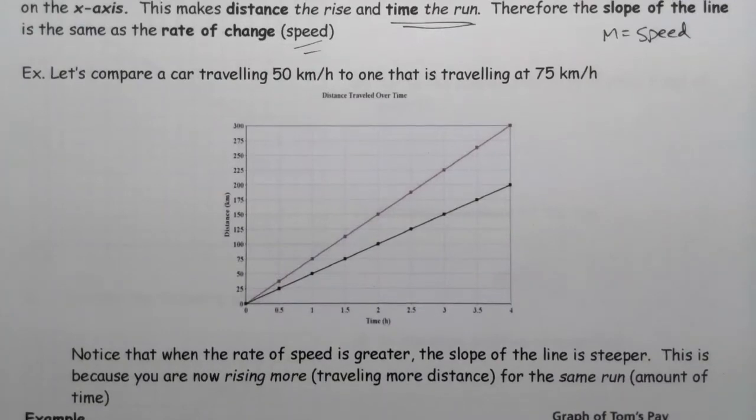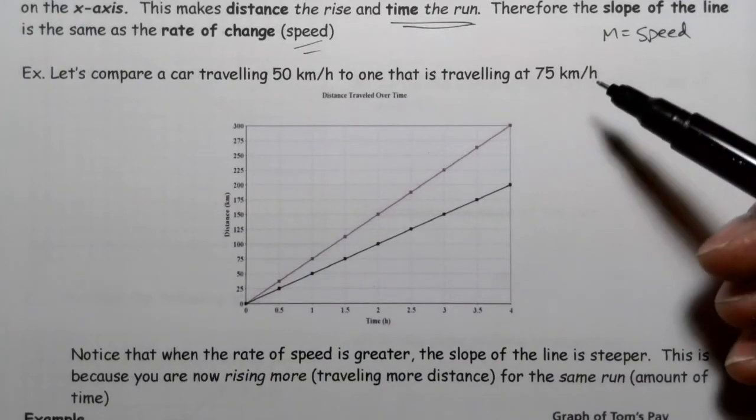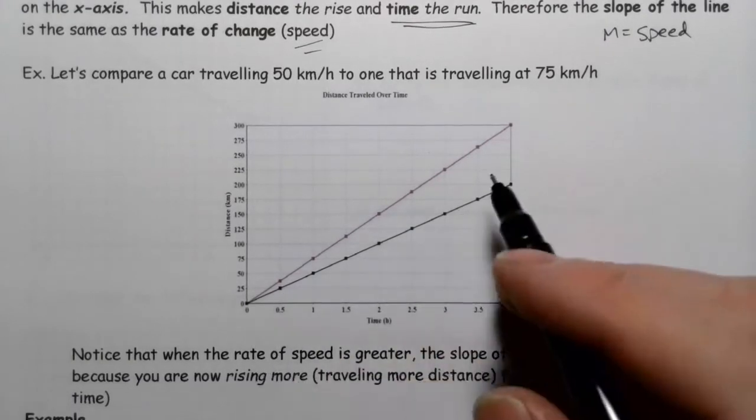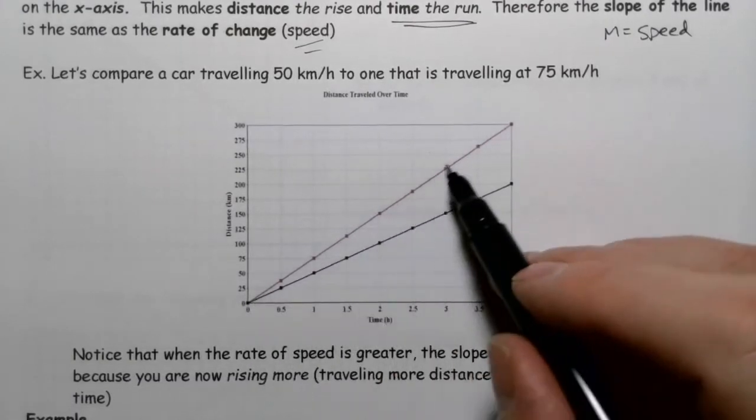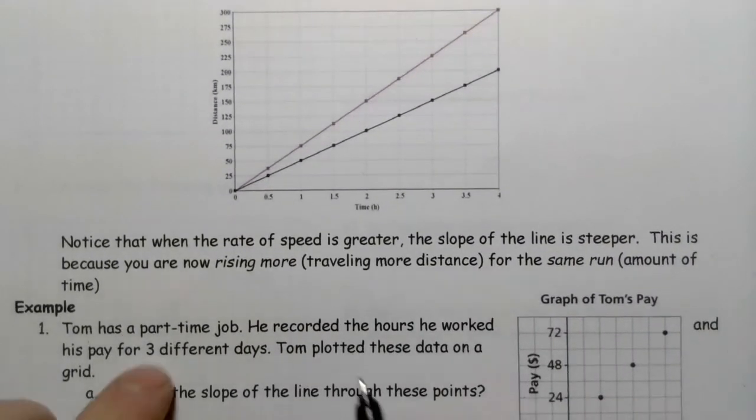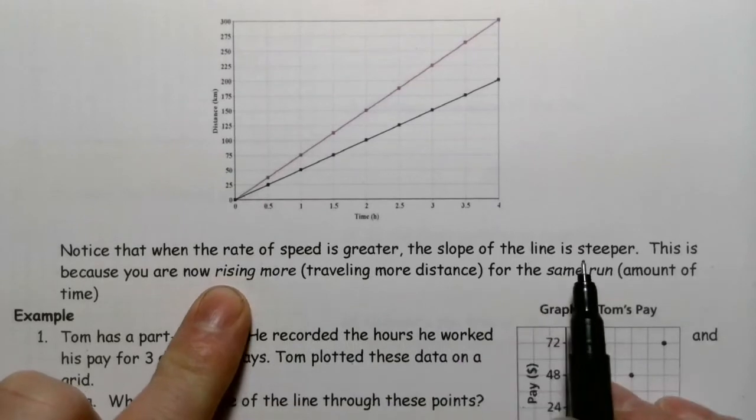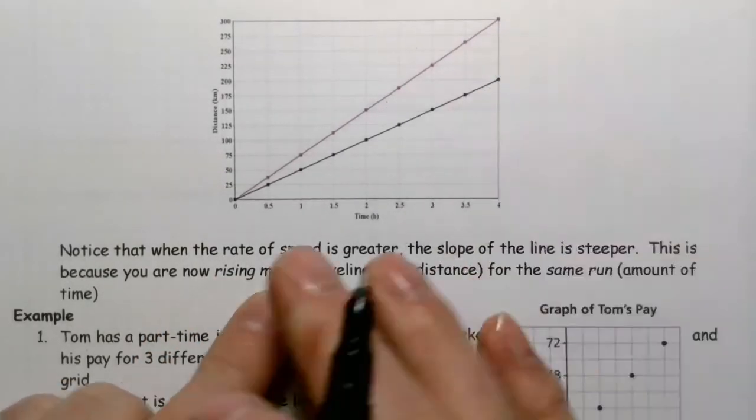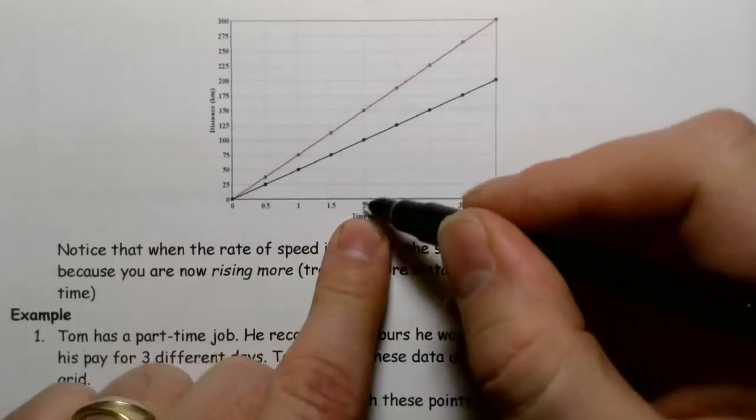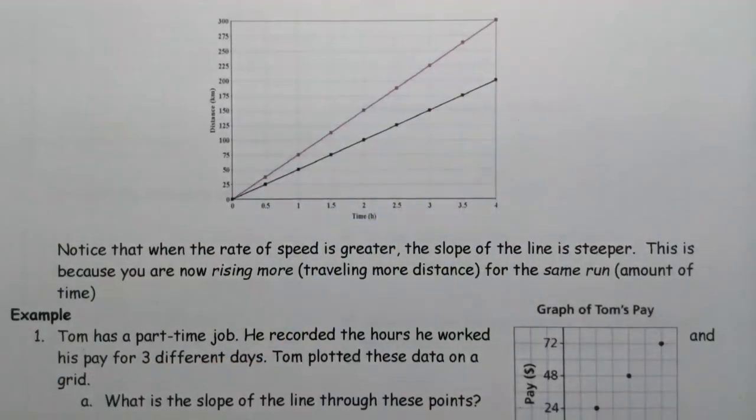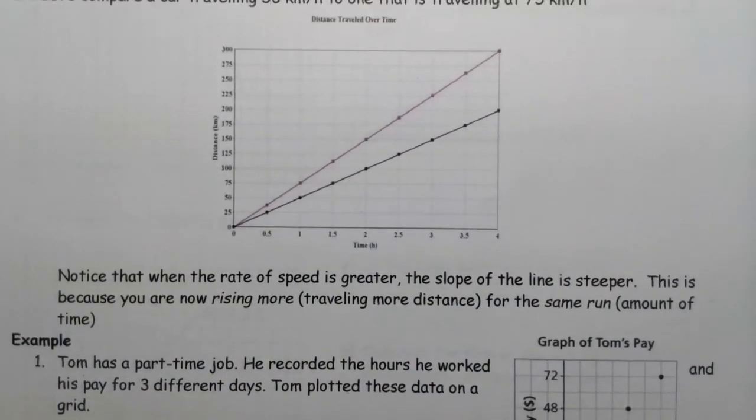Let's compare a car traveling at 50 kilometers an hour to one that's traveling 75 kilometers an hour. Larger speed, you can probably guess which line that is. Notice that when the rate of speed is greater, the slope of the line is steeper. That's because you are covering more distance in the same amount of time.